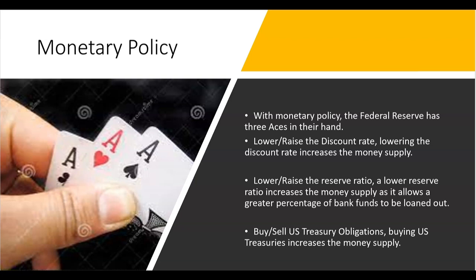Another ace in the hand of the Federal Reserve has to do with the reserve ratio. The Federal Reserve could lower or raise the reserve ratio. Lowering the reserve ratio allows a greater percentage of bank funds to be loaned out, whereas raising the reserve ratio forces bank funds to be kept in. Raising the reserve ratio is contractionary; lowering it is expansionary, just like lowering the discount rate.